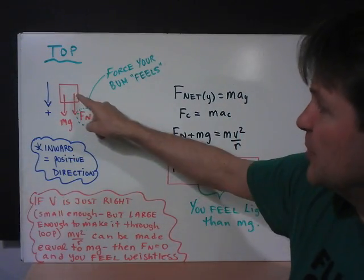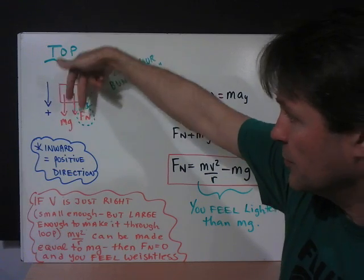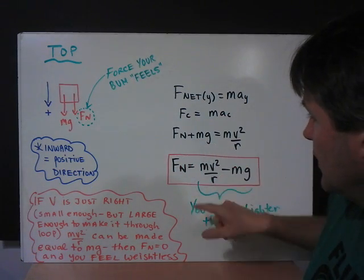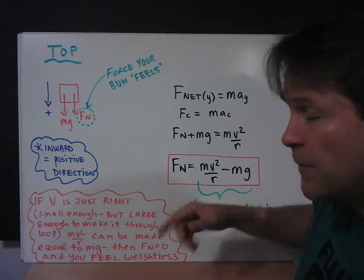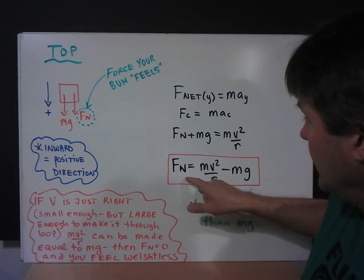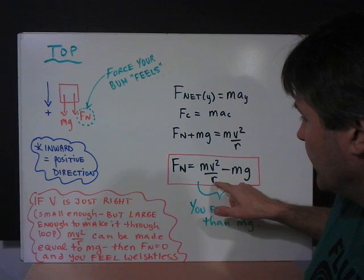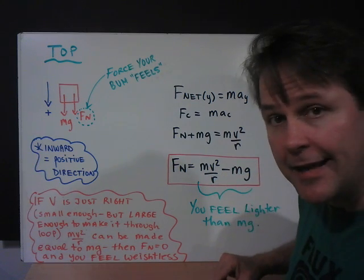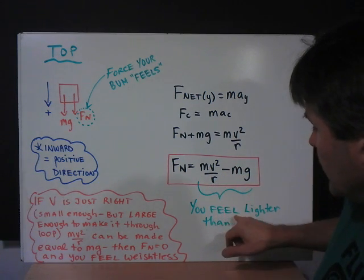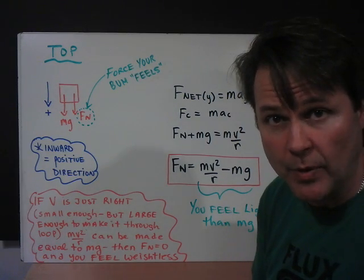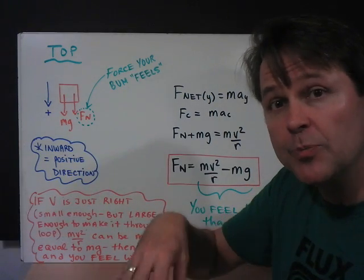So in the top position, both of those forces are downward. So Fn plus mg. The force that you feel on your bottom is going to be equal to mv squared divided by r minus mg. So consequently, you feel lighter than your weight when you are going through a loop-de-loop.